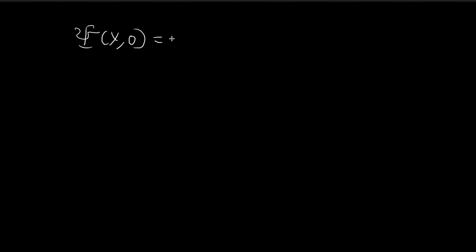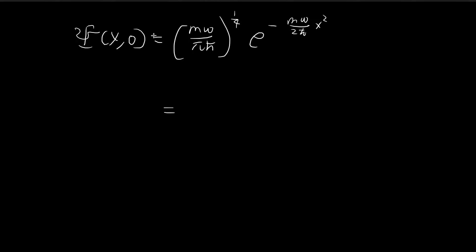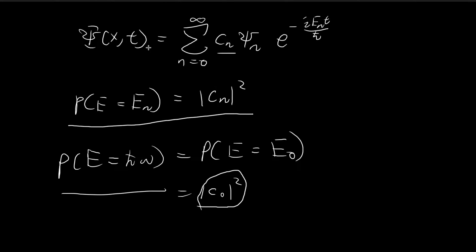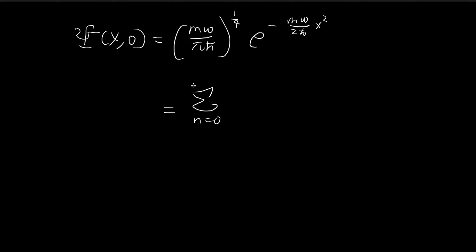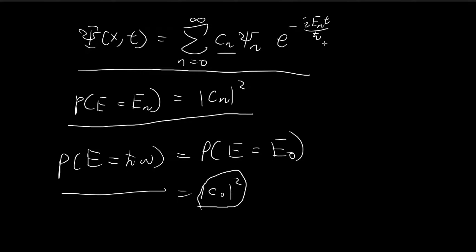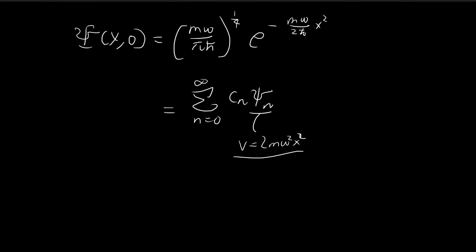We can find c₀ using Fourier's trick, since we know what the initial wave function is — it is the ground state corresponding to the original frequency ω. This initial wave function is set equal to the general expansion at t = 0. Note that the ξ₀ here corresponds to the new potential with frequency 2ω, not the original one. At t = 0, the exponential time factor equals 1, so we get a simplified expression.